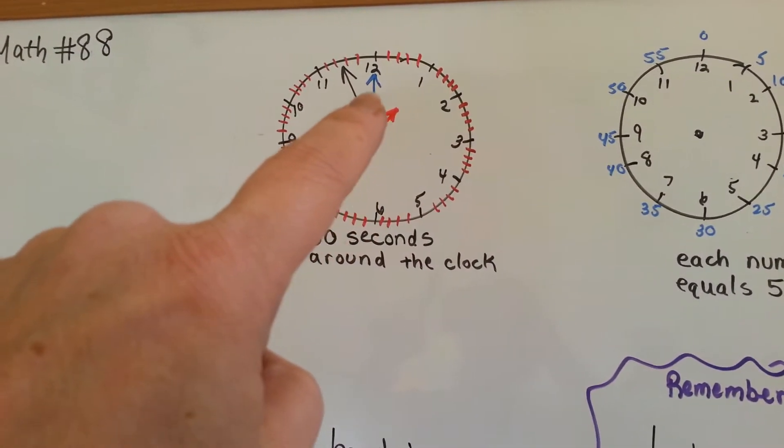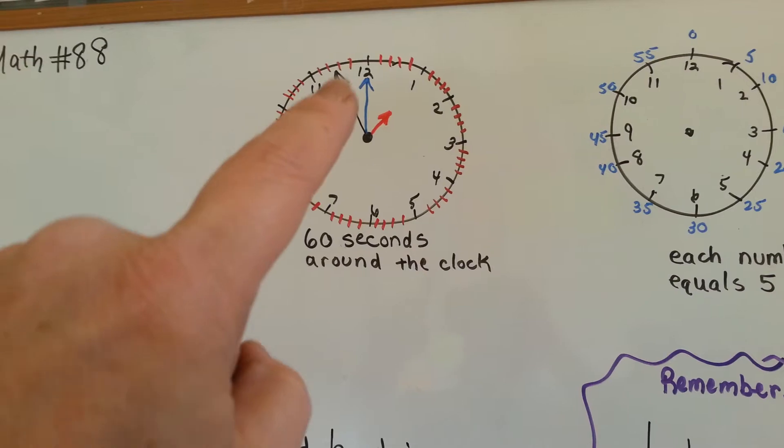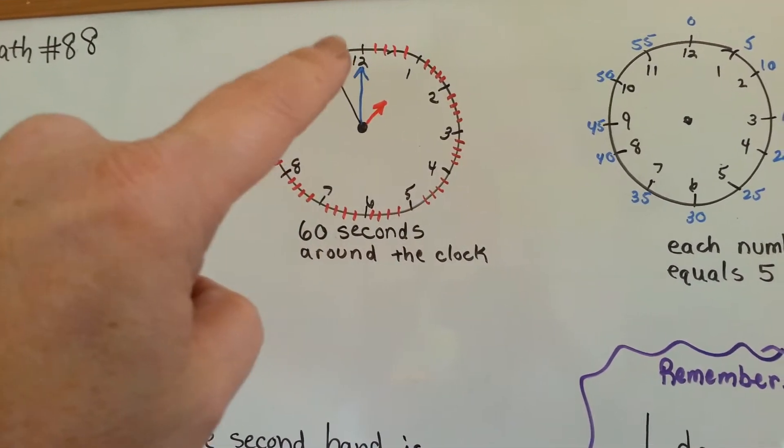Here's the hour hand, here's the minute hand, and here's the second hand. If it goes around one time, it's one minute.